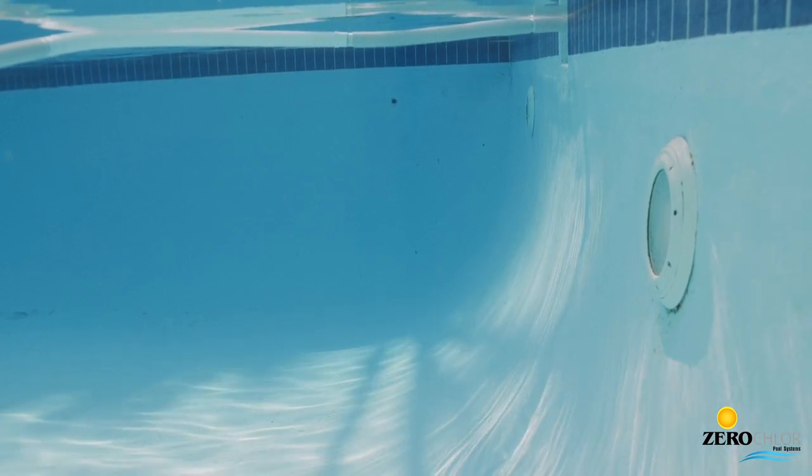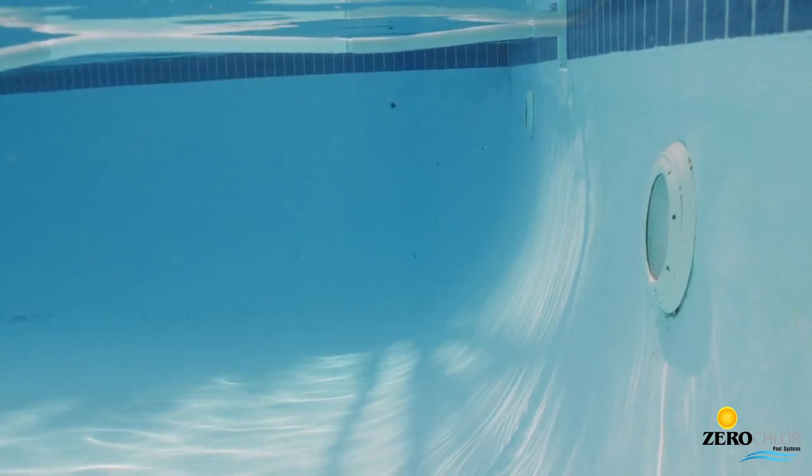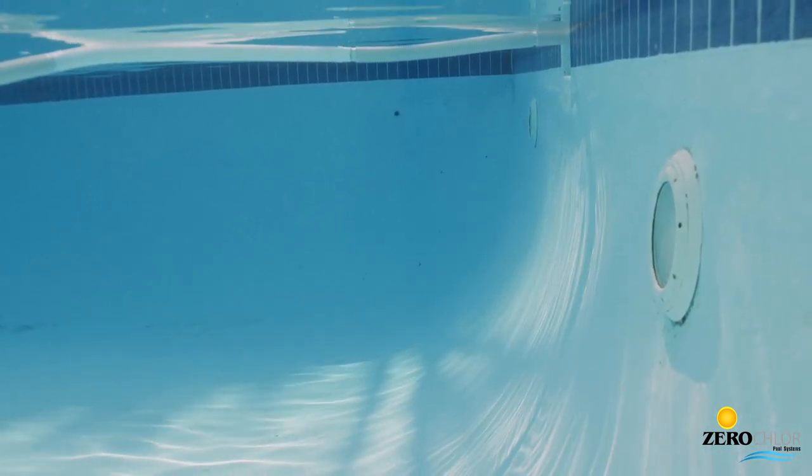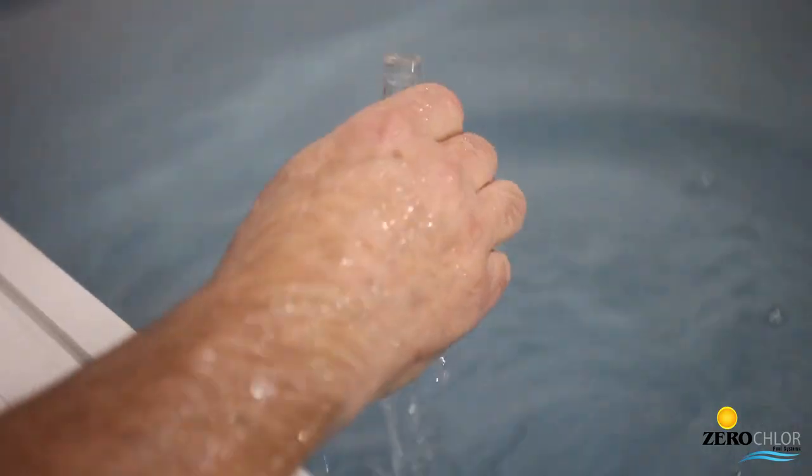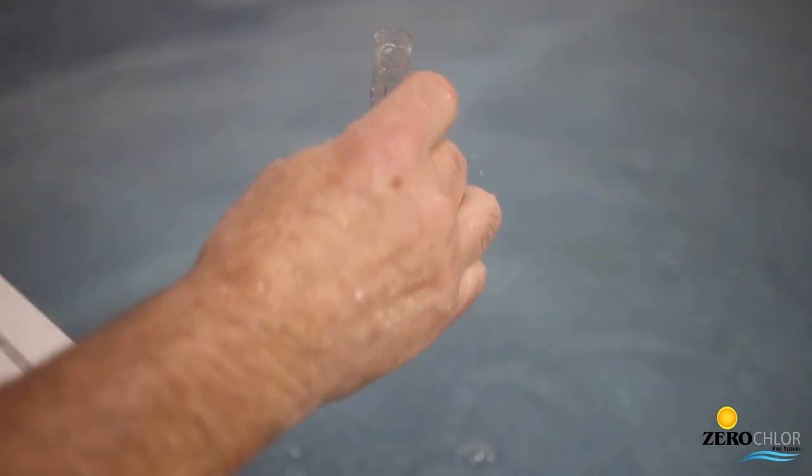When gathering a water sample for testing, find an area in the pool away from a jet or skimmer, but not in a dead spot. Rinse the sampler tube first. The sample should be taken at a depth of one and a half to two feet deep, or elbow deep as a reference.